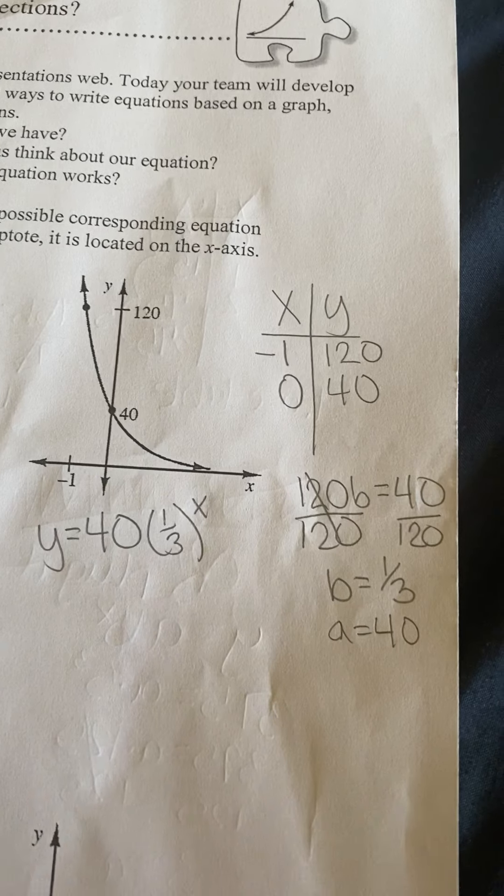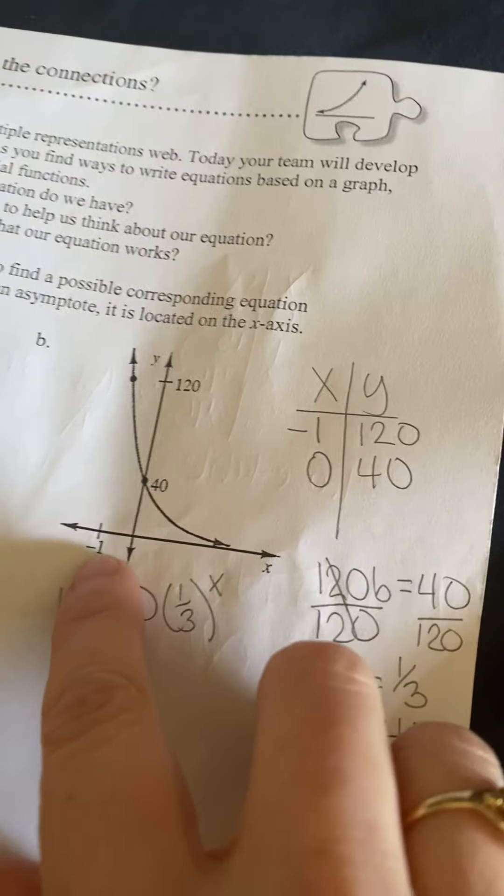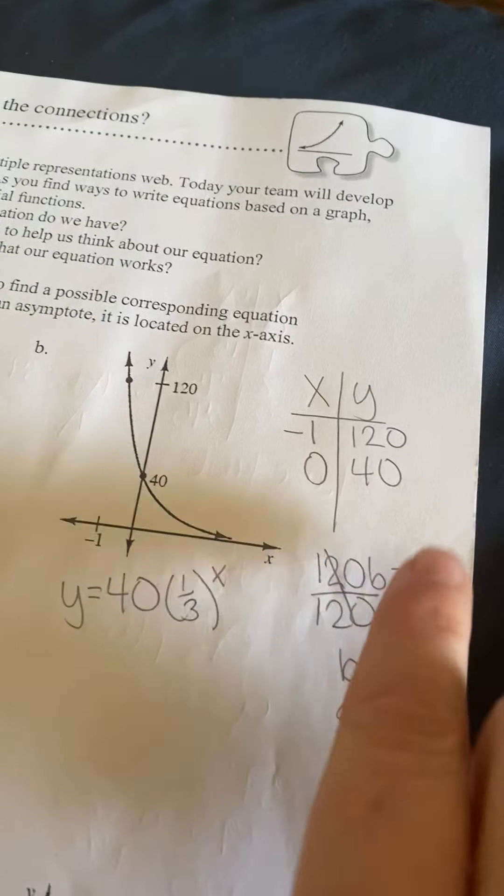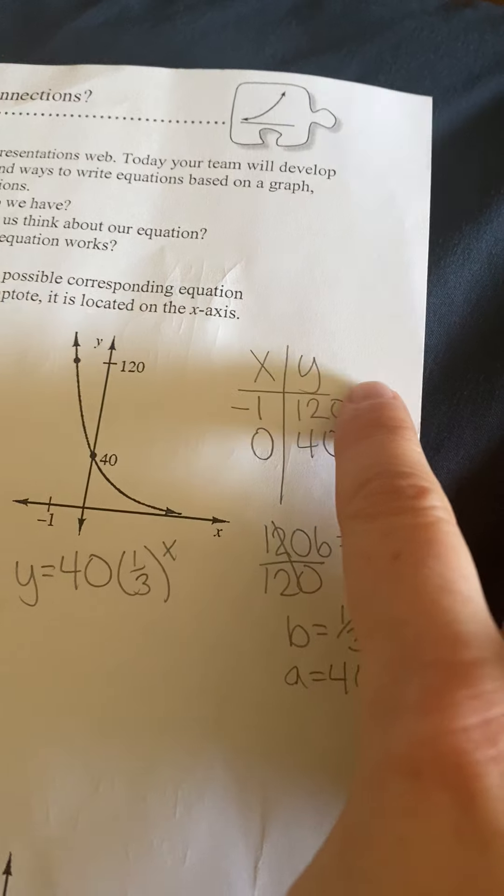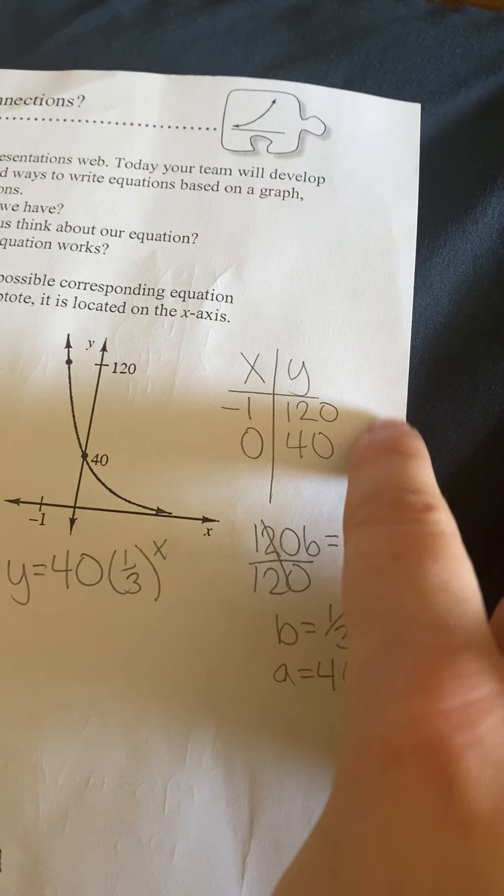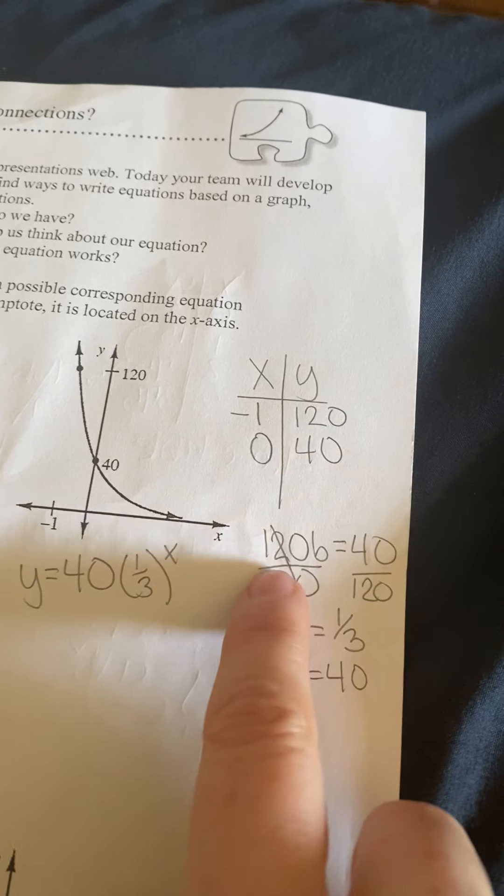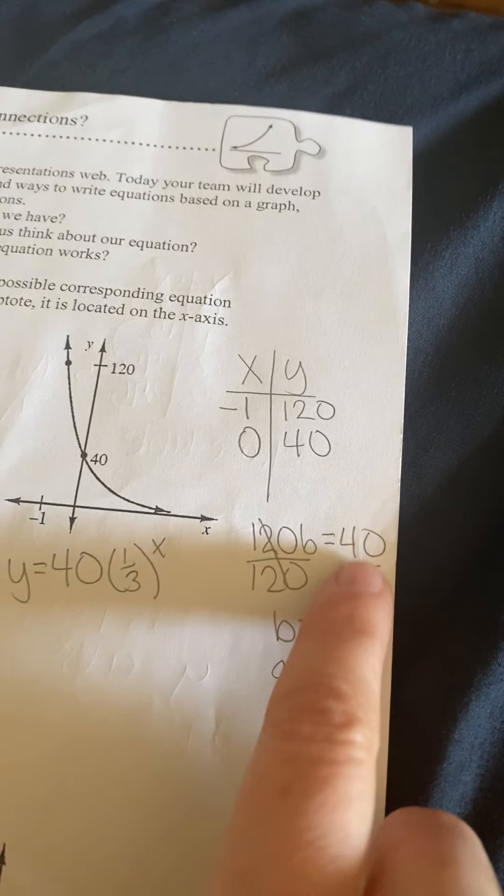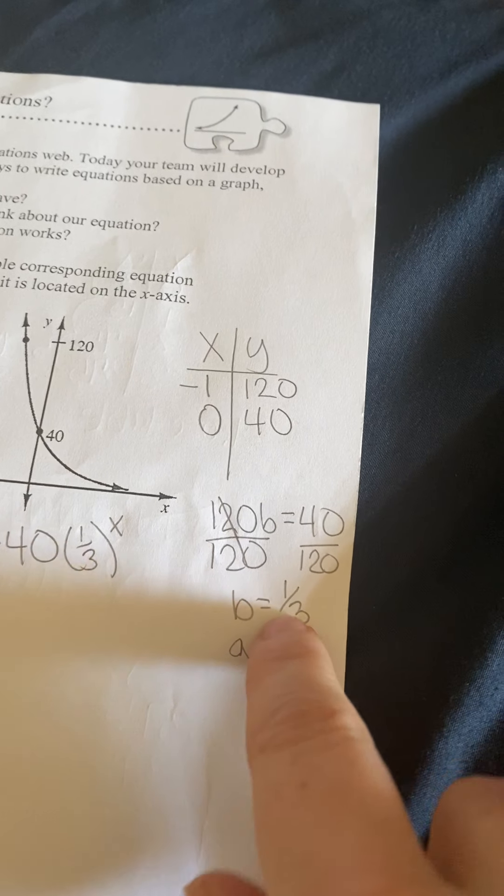Now let's look over here at b. The two points that we're given this time are (-1, 120) and (0, 40). So from there, again, you want to try to find what you multiplied by. So 120 times what would give you 40? That's division. 40 over 120 is 1/3. So your multiplier is 1/3.